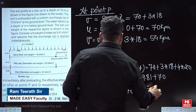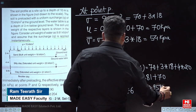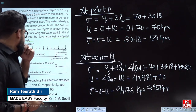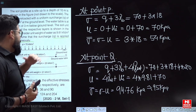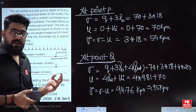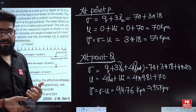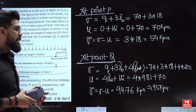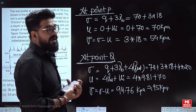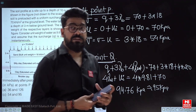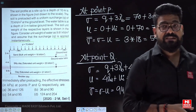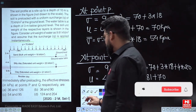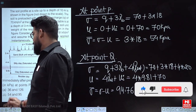Rounding off, this gives approximately 95 kilopascals and the answer is option C. The reason we consider excess pore water pressure in silty clays is that the permeability of silty clays is very low, so under sudden loading the excess pore water pressure is unable to dissipate, and we must account for it in the effective stress calculation.